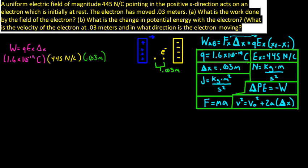When you do that, you get 2.14 times 10 to the negative 18. For units: we have coulombs, newtons per coulomb, and meters. The coulombs cancel out, leaving newtons times meters. A newton is kilograms times meters per second squared, times a meter gives meters squared, so we're left with joules. The work done is 2.14 times 10 to the negative 18 joules.